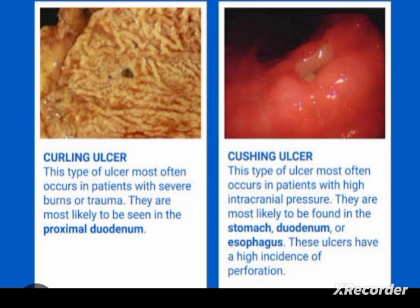The Cushing ulcer is associated with high intracranial pressure, intracranial injury, and intracranial disease. These Cushing ulcers are commonly seen in the stomach, duodenum, and esophagus. Cushing ulcers have a high incidence of perforation.